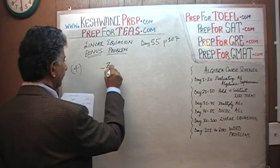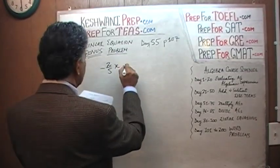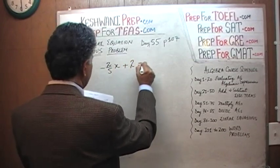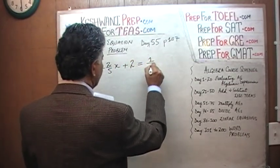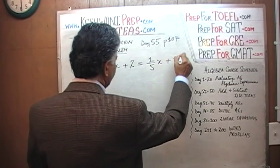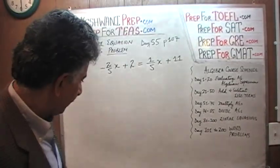Negative 2 over 5x plus 2 equals 1 over 5x plus 11. Let's see what we can do, shall we?